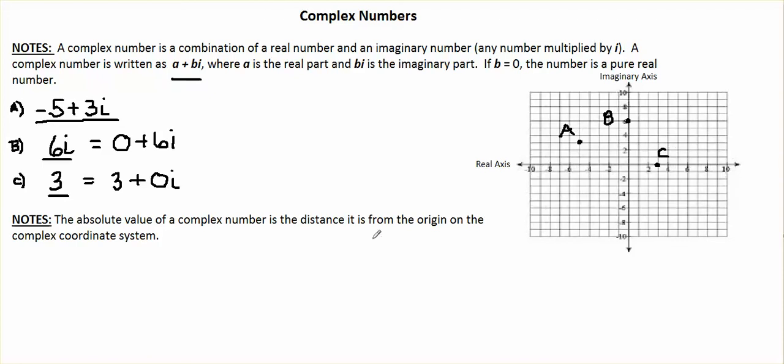So now let's talk about the absolute value of a complex number. The absolute value is the distance our number is from the origin. And we can write a formula for the absolute value as the square root of a squared plus b squared equals the absolute value of a plus bi.